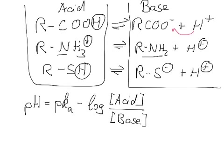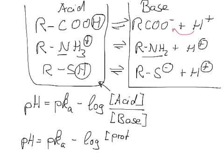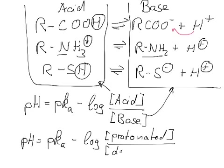Or we can write this also as protonated and deprotonated. So pH equals pKa minus log, now the acid, that is the protonated form, concentration of the protonated form, and the base that is the deprotonated form.